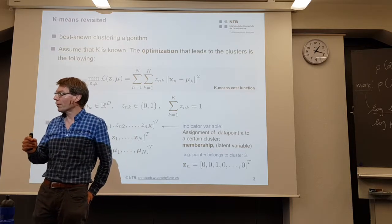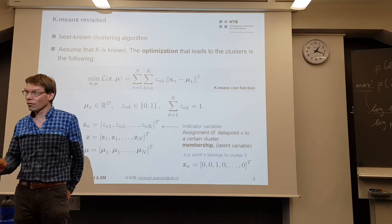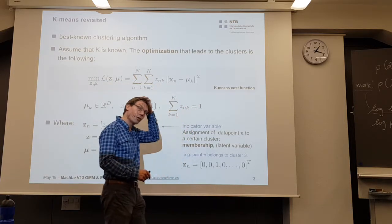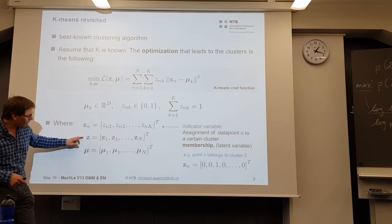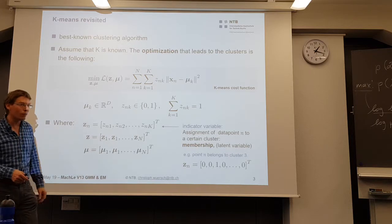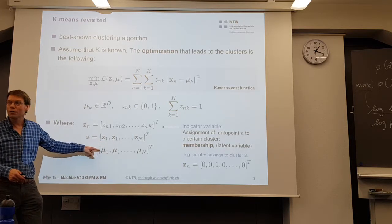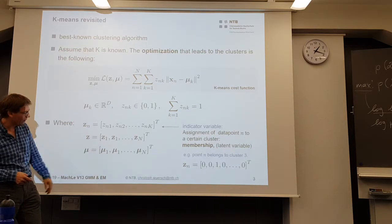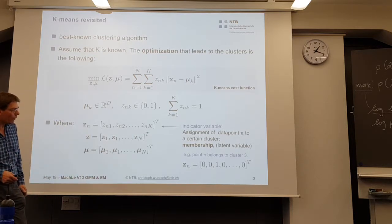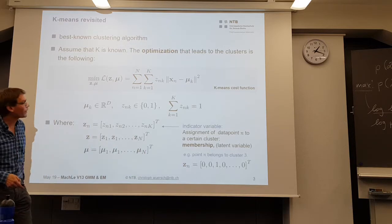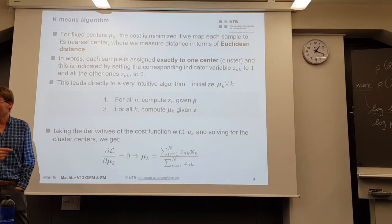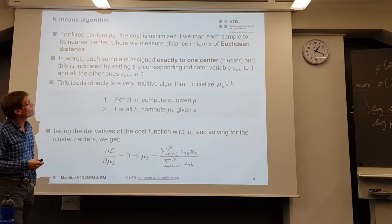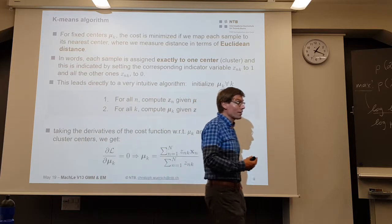Different from DBSCAN, for example, where we also have noise points that belong to nothing — in k-means you get an assignment, even the outliers. The means and the centroids are unknown, and the assignment is unknown, but we know each point must belong to at least one cluster — this means we do complete clustering. For fixed centers, the cost is minimized if we assign each sample to its nearest center. Taking the derivative of the cost function, we get this solution: assignment to the closest center is the optimal choice.